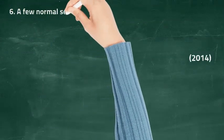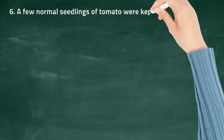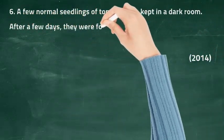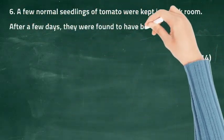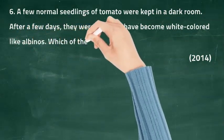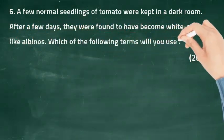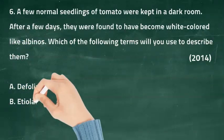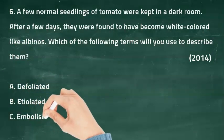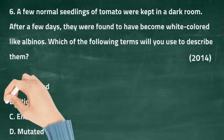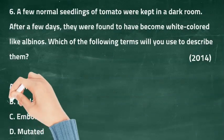Question six: a few normal seedlings of tomato were kept in a dark room. After a few days, they were found to become white-colored and albuminous. Which of the following terms would you use to describe them? Option A: defoliated, option B: etiolated, option C: embolized, option D: mutated. The right answer is option B, etiolated.